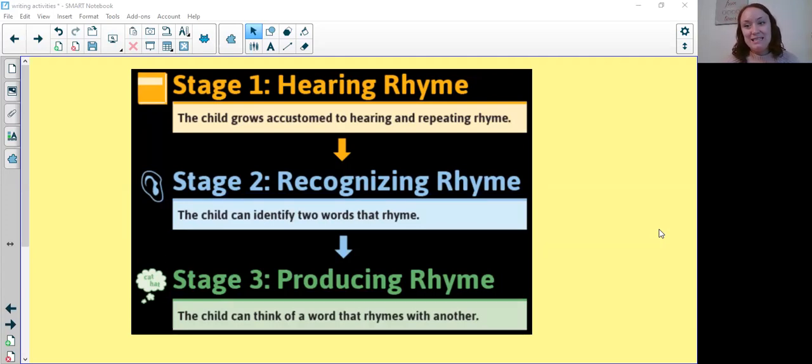Really this lesson needs to start off with you gauging whereabouts your child is at. So as they develop rhyming, there's three stages that they go through.